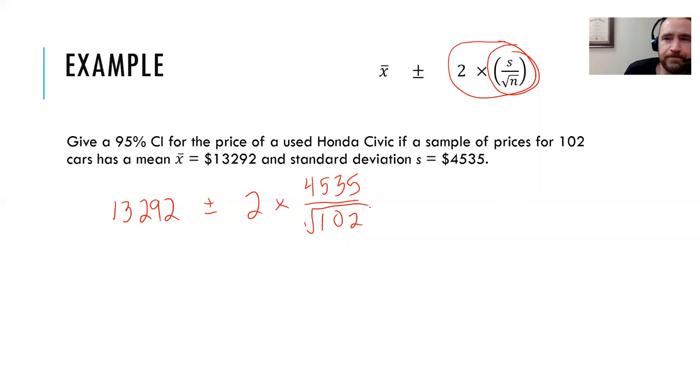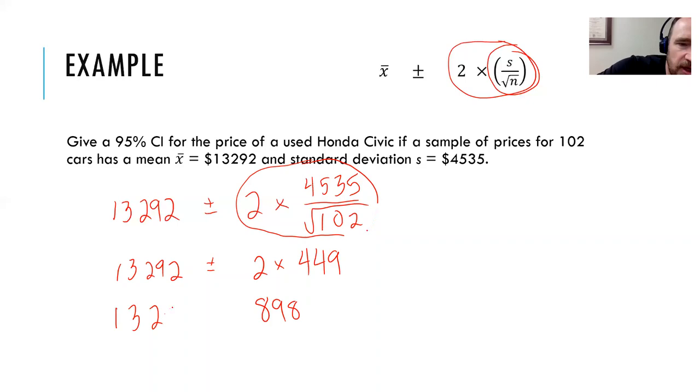I have calculated on a calculator the formula for my standard error here, two times, and I'm just going to round it to $449. It's a few cents more than that, but we'll round it to that. Then when I double it, that's going to be $898. And that's my margin of error. That's what all of this calculates for me, my margin of error. And so I've got $13,292 plus or minus $898.